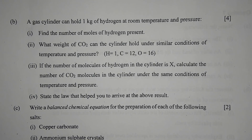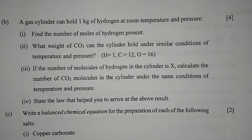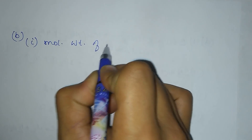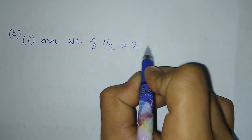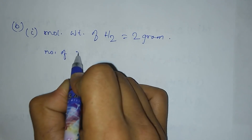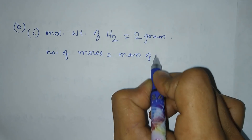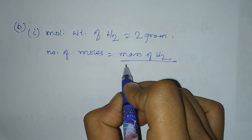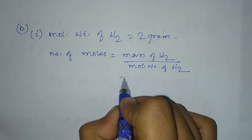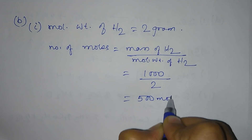Question 5b: a gas cylinder can hold 1 kg of hydrogen at room temperature and pressure. Number 1 — find the number of moles of hydrogen present. Molecular weight of hydrogen = 2 grams. Number of moles = mass / molecular weight = 1000 / 2 = 500 moles.